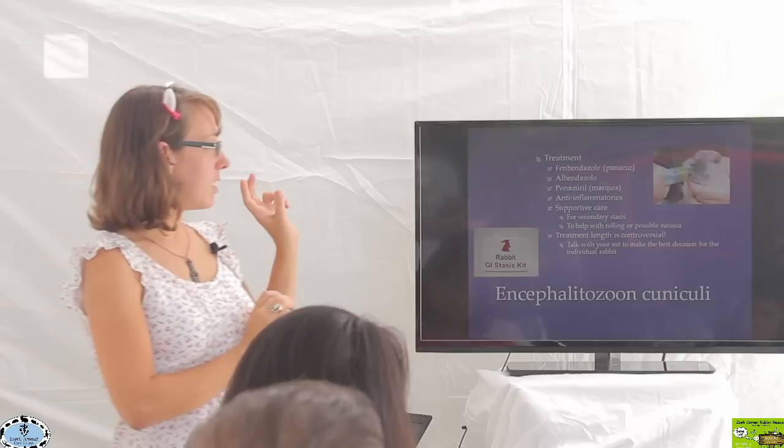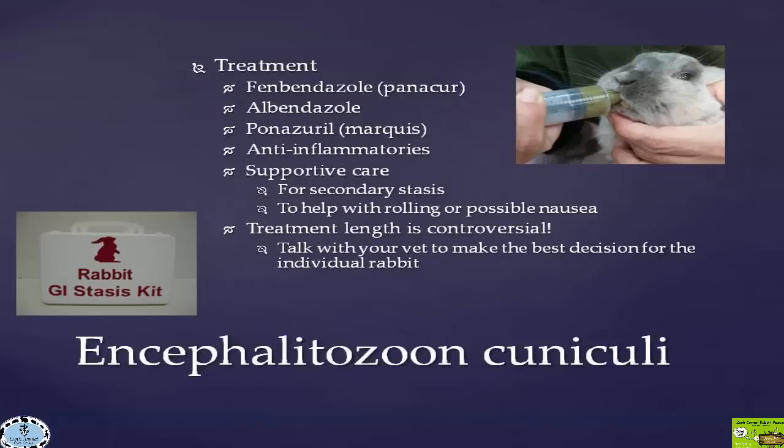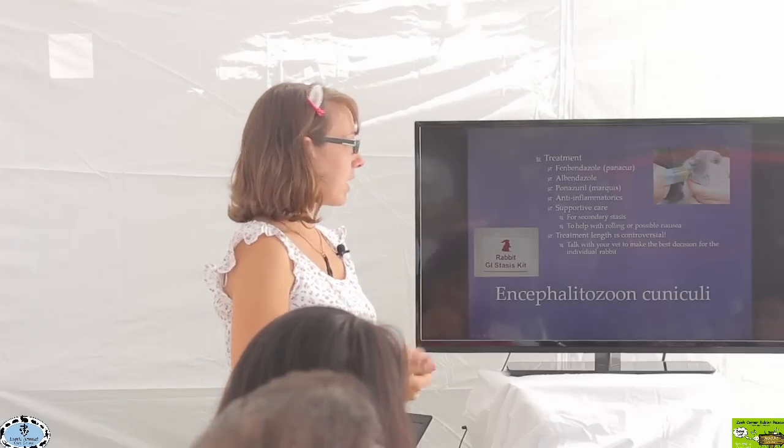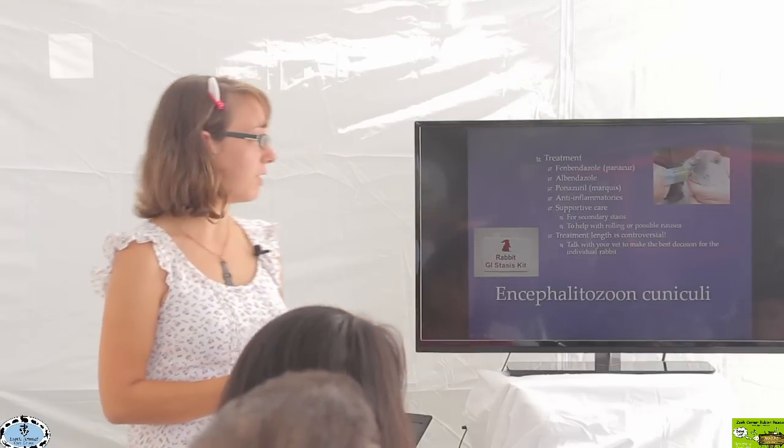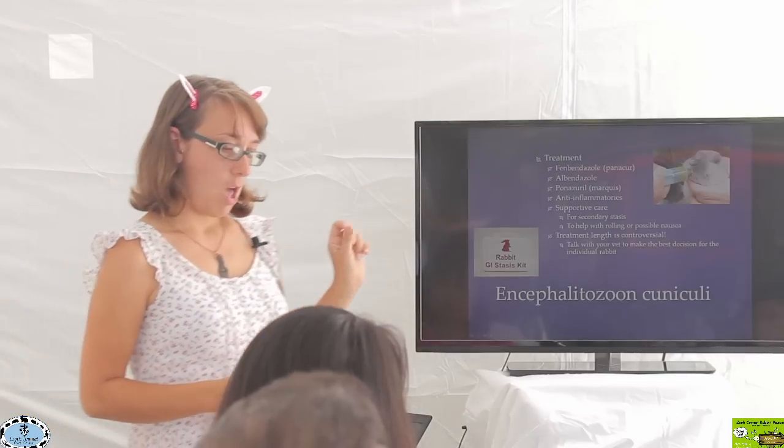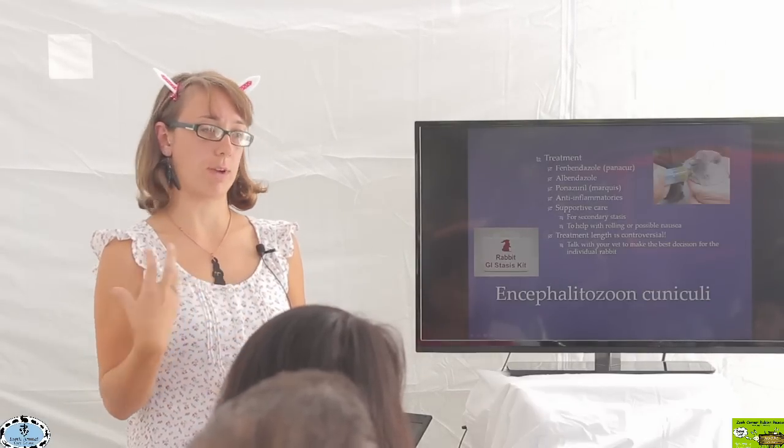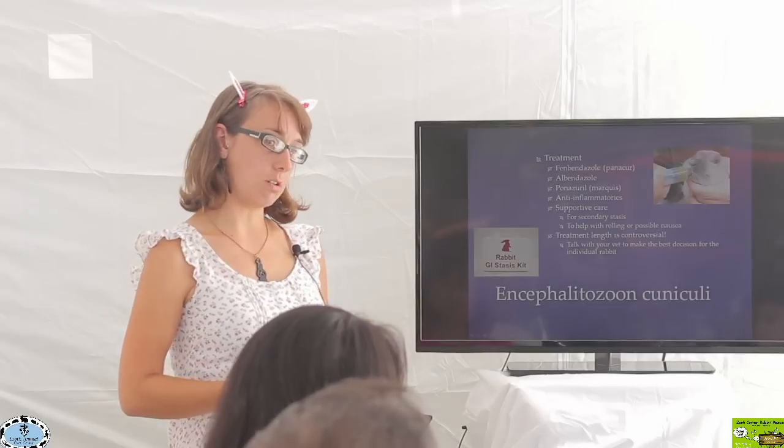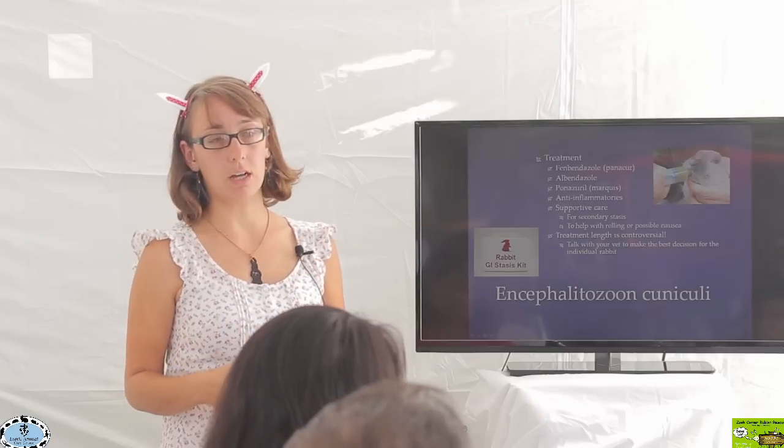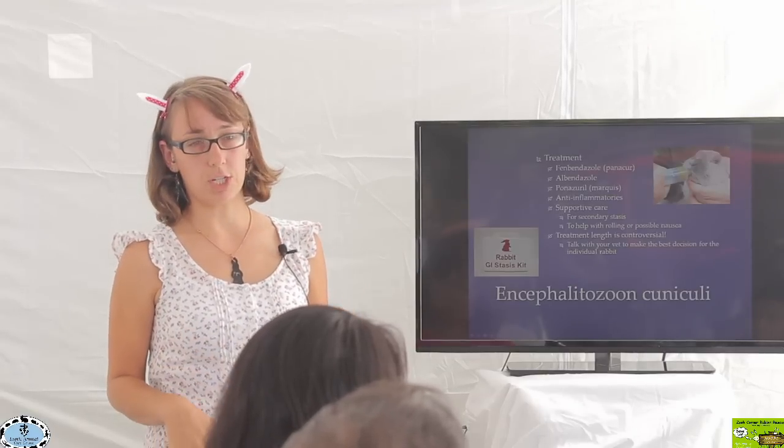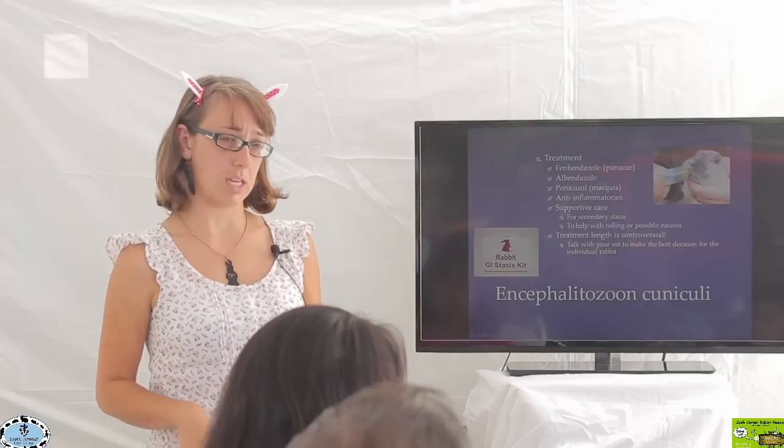The most common treatment for E. cuniculi is a product called Fenbendazole. The brand name is Panacur. Panacur and Fenbendazole are interchangeable. Another drug is called Albendazole. Both work in very similar fashions. There are controversies associated with those medications. In particular, Fenbendazole, there are certain rabbits who have a sensitivity to it. Unfortunately, we don't have a good way to identify which rabbits will be sensitive. As a side effect, it can cause suppression of the bone marrow. Your bone marrow is important for producing red blood cells, white blood cells, and platelets.